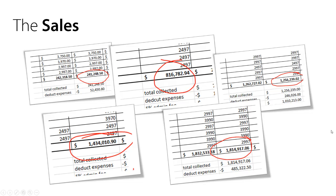Obviously the longer I'm on the road doing events and training, the more money made — that's absolutely obvious. $1.8 million is incredible. The expenses on that campaign were $485,000 for travel, venues, AV hire, and hotels — that's a look at the back end of my business.